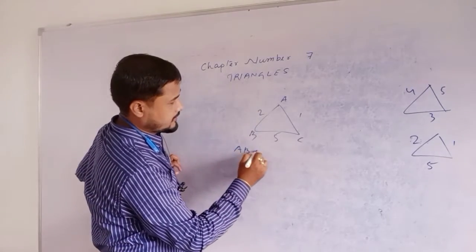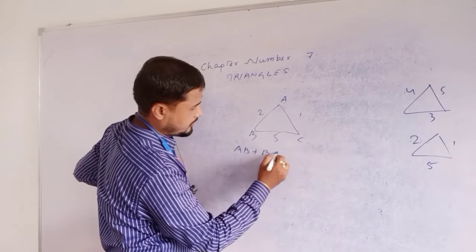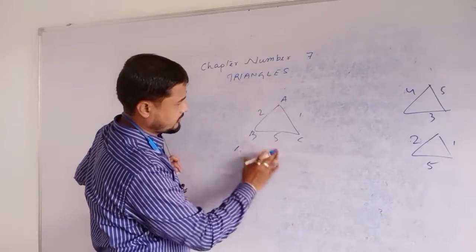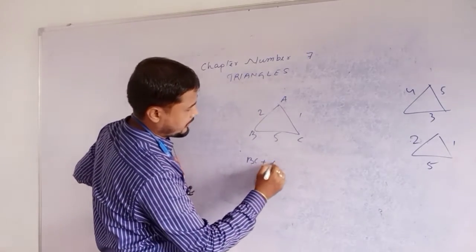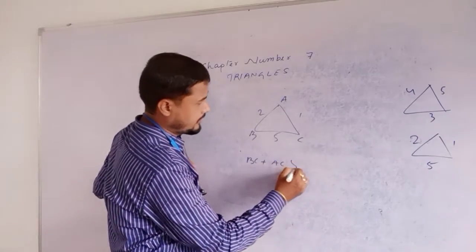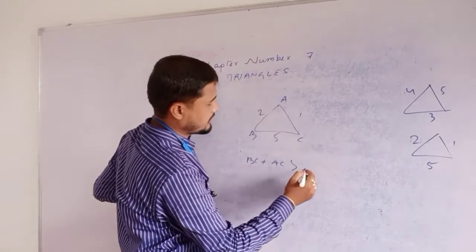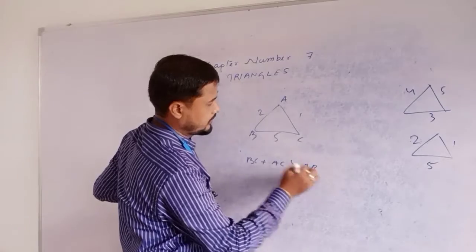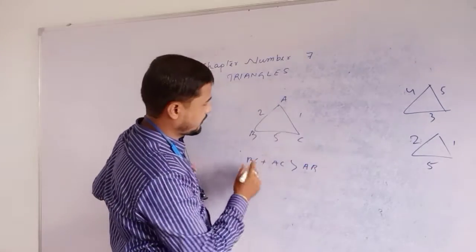AB plus BC. AB plus BC. First I am writing BC plus AC. Is BC plus AC greater than AB? What is the value of BC?